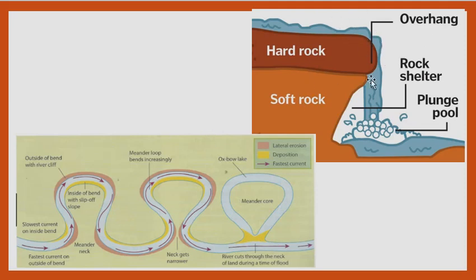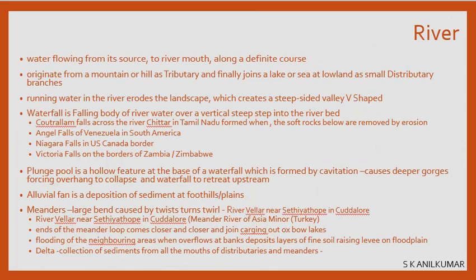Recapping the waterfall process: the overhang is the harder rock above the plunge pool. The plunge pool is created by cavitation; the water splashes and creates gorges. As the gorges grow, the hard rock above becomes unsupported and breaks down, and the waterfall retreats upstream. This is how waterfalls work alongside plunge pools and meanders.